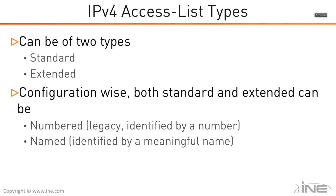Named ACLs are the recommended modern implementation. They're identified by a meaningful name, so you don't have the numeric limit concern of numbered ACLs. The main advantage is that by looking at the ACL name, you should be able to understand what it's used for. Both access list types support remarks, so any line can have a remark attached, but a meaningful name is preferred to better identify the scope.